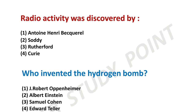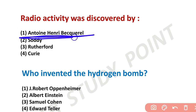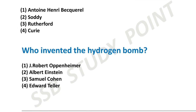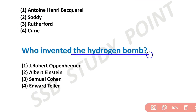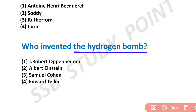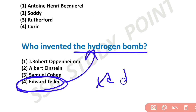Radioactivity was discovered by Antoine Henri Becquerel. Who invented the Hydrogen bomb? The Hydrogen bomb was invented by Edward Teller. Note: Edward Jenner is for vaccination/smallpox — don't confuse Edward Teller with Edward Jenner.